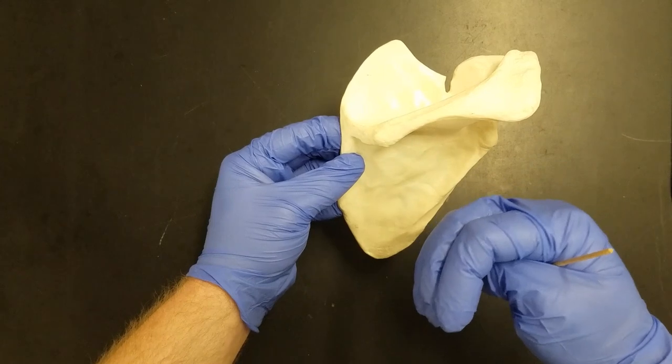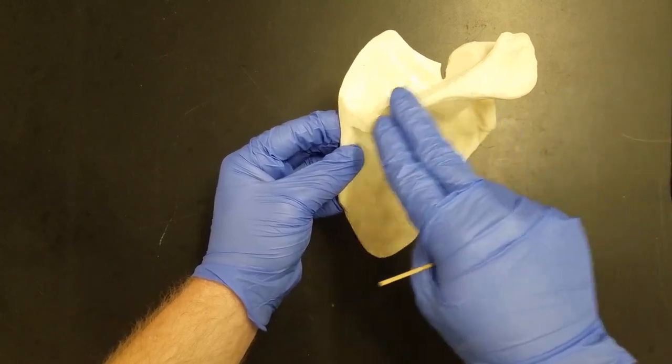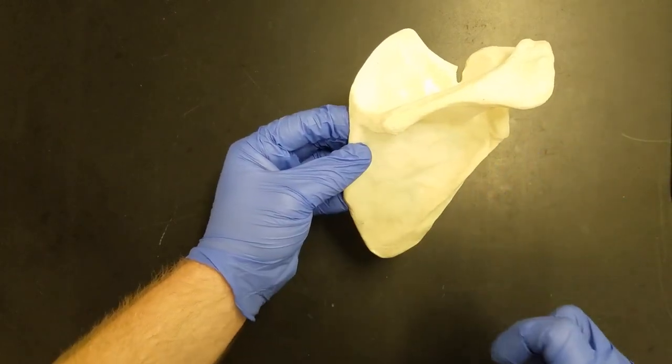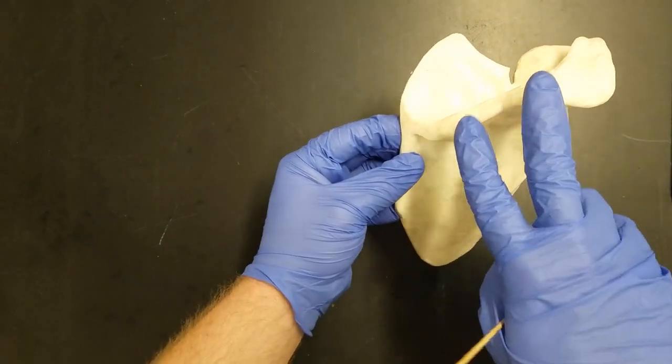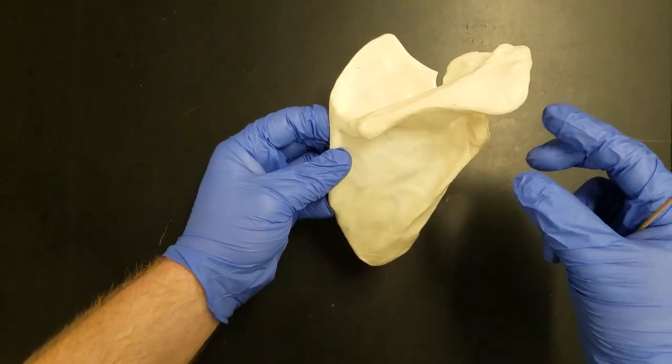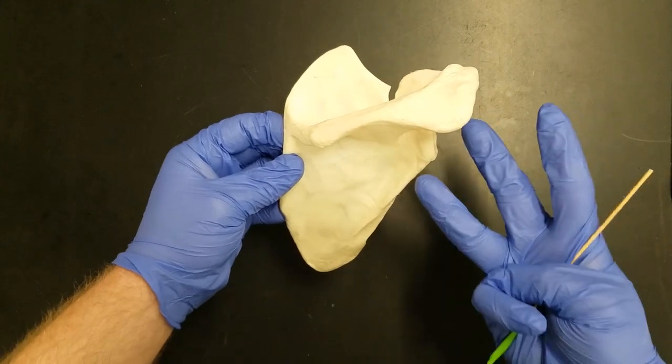If you reach around and touch your shoulder blade, your scapula, you should feel that ridge running across the back of it. It's important for us in anatomy because it's going to allow us to find our next three structures.